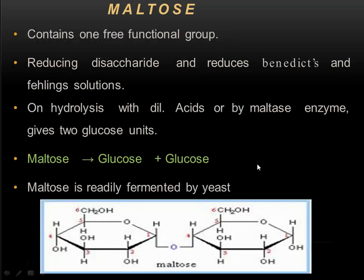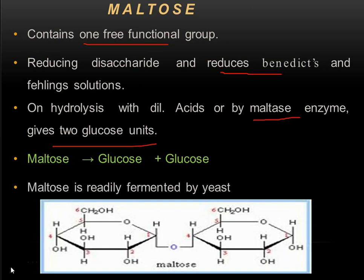Maltose contains one free functional group, so as a reducing sugar it reduces Benedict's and Fehling's solution to give a colored complex product. On hydrolysis of maltose with dilute acids or with the enzyme maltase, we get two monosaccharide units — both are glucose, because maltose is made of two glucose units. Maltose on hydrolysis gives glucose and glucose. Maltose is also readily fermented by yeast.